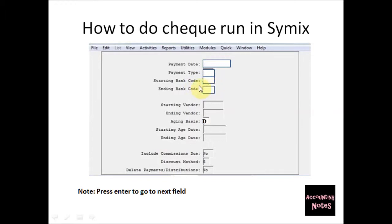There is also an Ending Bank Code, which is the same code you would enter in the starting field. For the starting and ending vendor fields, you would leave them blank, which means it will include all vendors that are due. But if you need to do a check for just one vendor, enter the vendor number in the starting box and the same vendor number in the ending box. If you want multiple checks, leave these fields blank.